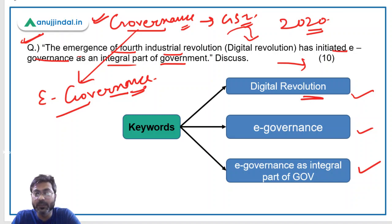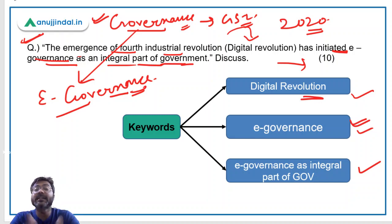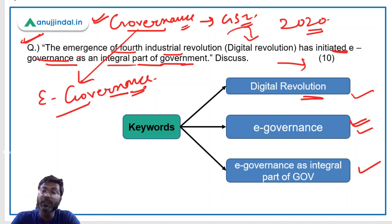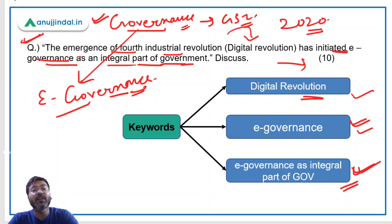The key keywords in this question are: number one, digital revolution — you have to define what a digital revolution is or tell the examiner what are the benefits of digital revolution and what changes it is providing to society. Then you have to move to the e-governance part, because the question says digital revolution has initiated e-governance as an integral part. These are the three keywords to focus on.